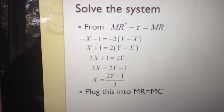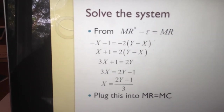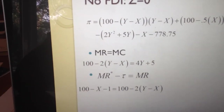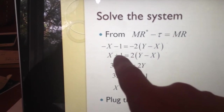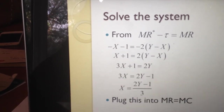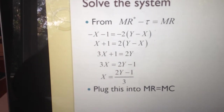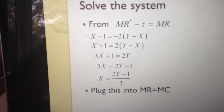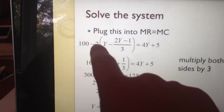Step three is always just solve the system — you can start with any equation. Starting with marginal revenue in the UK minus transport cost equals marginal revenue back in Ireland, I cancel the 100s, multiply both sides by negative one to remove negatives, bring minus 2x over to get 3x, move the remaining terms, and divide each side by 3. That gives x as a function of y. Then I plug that back into the marginal revenue equals marginal cost equation: 100 minus 2 times y minus x equals marginal cost.